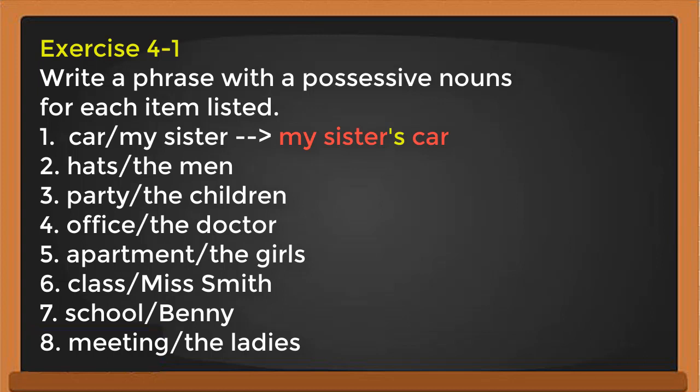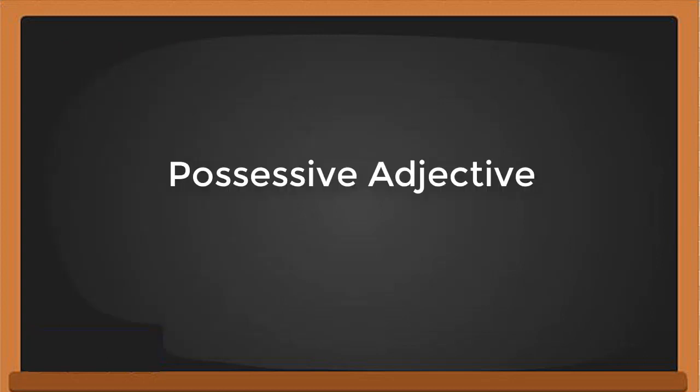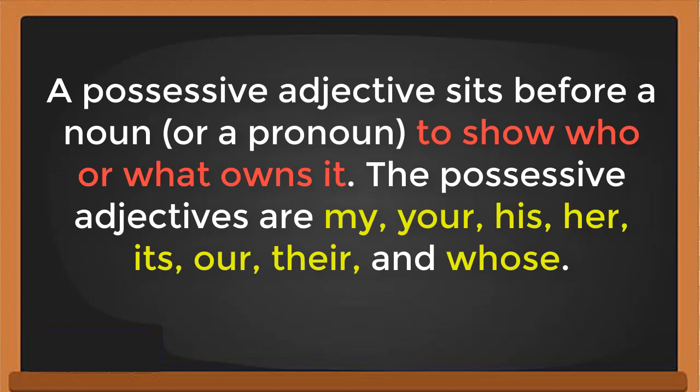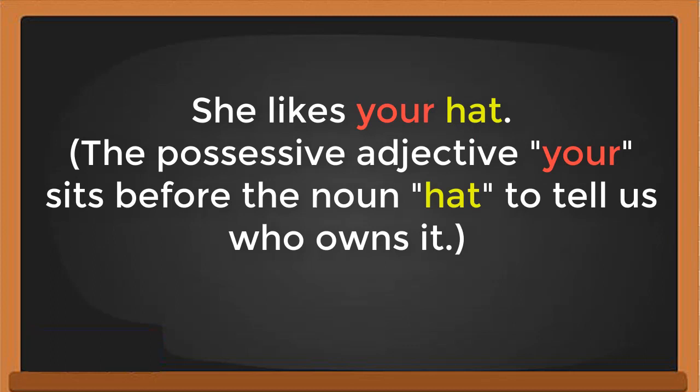I'll let you do the rest of the exercise and you can look at the answers in the description. Now let's continue with possessive adjectives. A possessive adjective sits before a noun or pronoun to show who or what owns it. The possessive adjectives are: my, your, his, her, its, our, their, and whose. For example: 'She likes your hat' — the possessive adjective 'your' sits before the noun 'hat' to tell us who owns it.